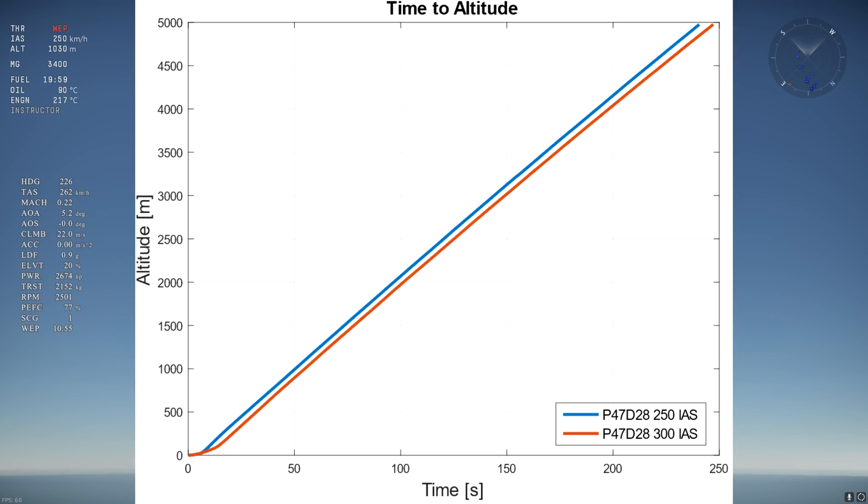The next thing to be wary about is far more sneaky and insidious in nature, so let's shed some light on that. So we know that a time to altitude graph starting from the runway is not a good way to find the optimal climb speed.